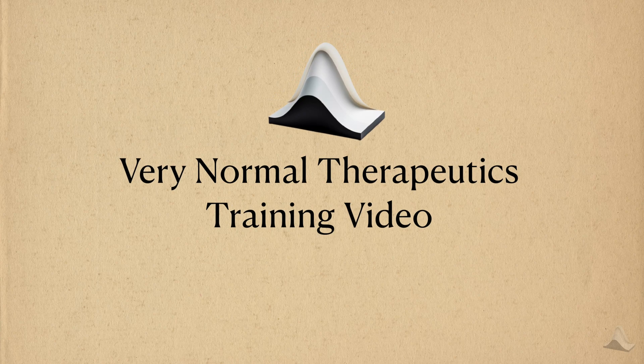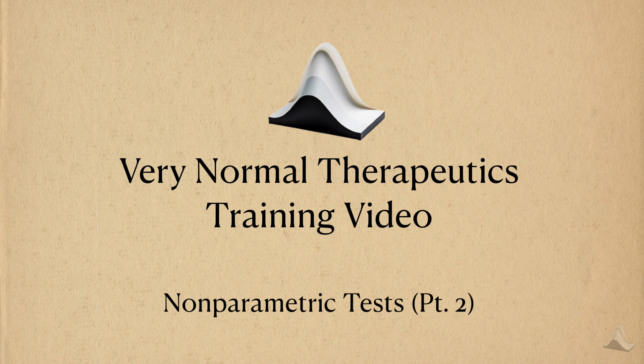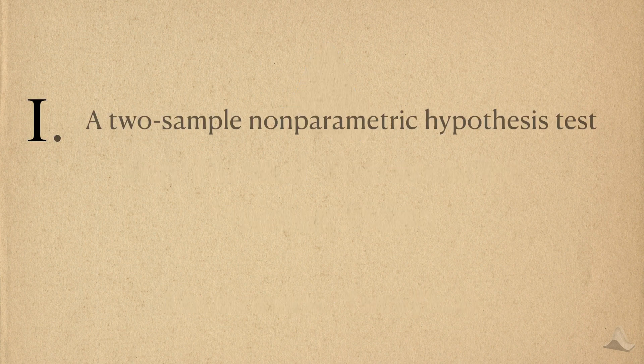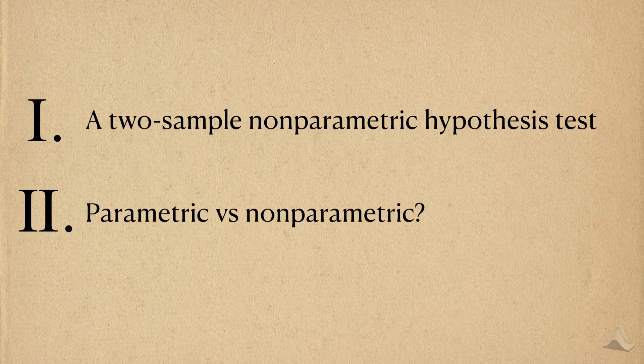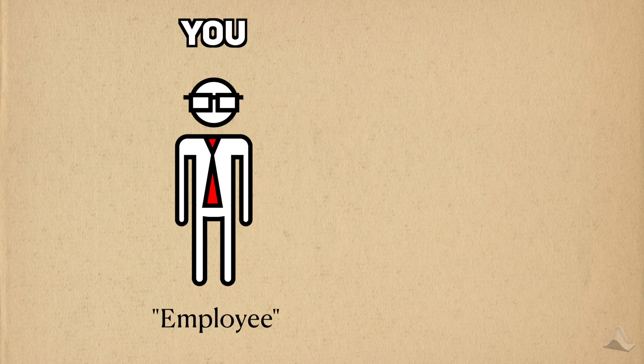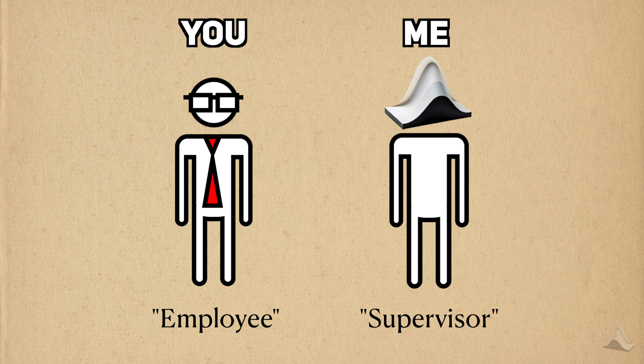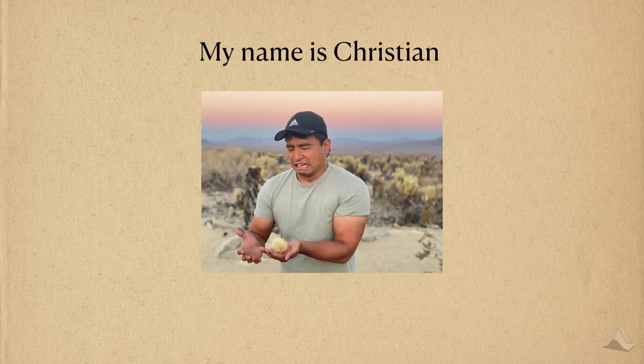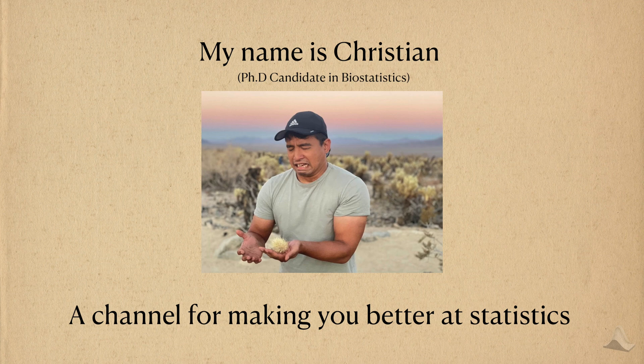Welcome to a Very Normal Therapeutics training video. Today I'm going to continue on the topic of nonparametric statistics. We're going to look at the nonparametric analog to the two-sample t-test and learn how to decide when a nonparametric or parametric test is appropriate for your problem. Remember that you are a fictional new employee in my fictional pharma company, and I'm in charge of making sure you know your stuff when it comes to statistics. But if you're totally new to the channel, my name's Christian and this is Very Normal, a channel for making you better at statistics. Let's get started.